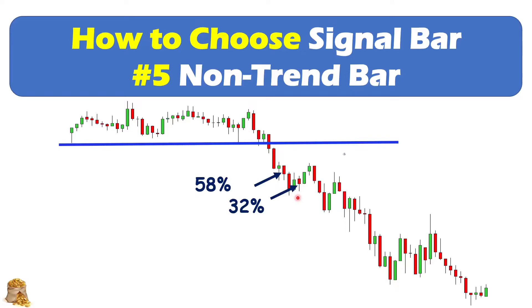Later on, we can see there's another one. This bear bar has a body of 85% of the whole candlestick. So this is a trend bar, not a non-trend bar. You can see the market goes down by two other consecutive bear bars, so you can see this as a start of the trend.